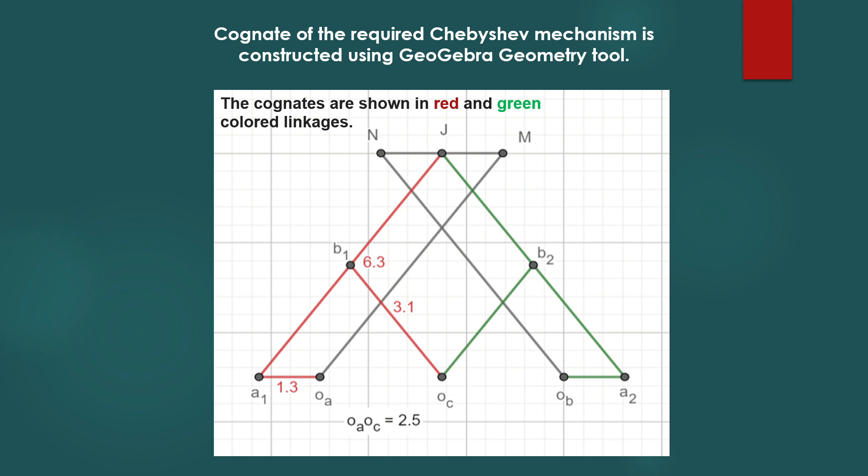Cognate of the required Chebyshev mechanism is constructed using GeoGebra geometry tool. The cognates are shown in red and green colored linkages.